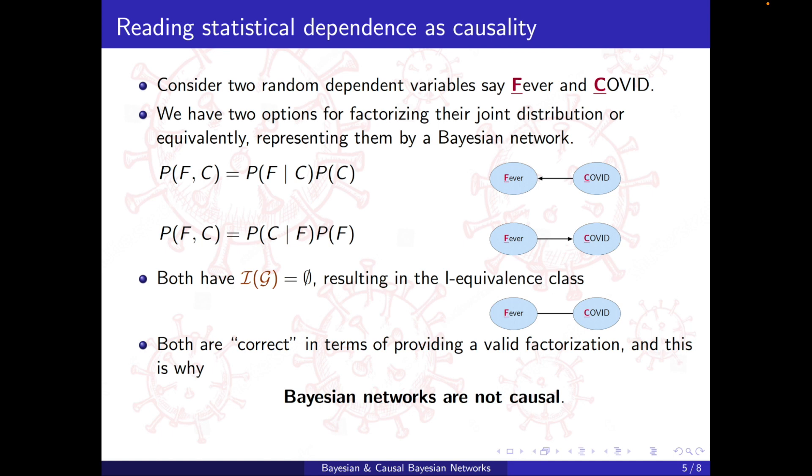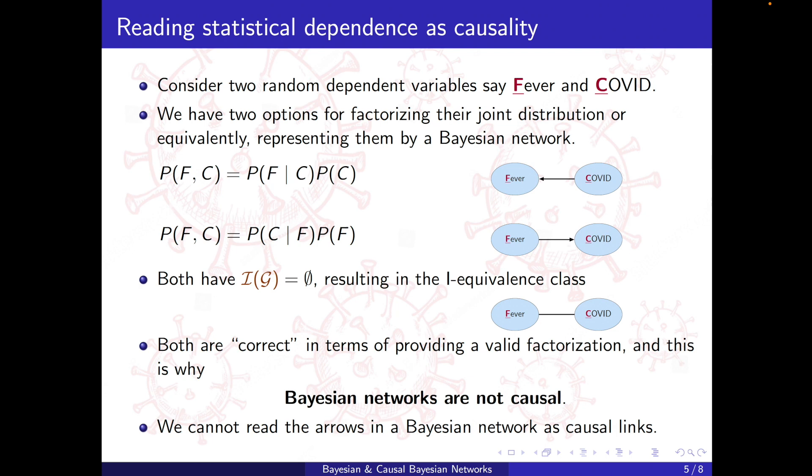And this is exactly why Bayesian networks are not causal. Because causality is in one direction, either A causes B or B causes A. So we cannot read the arrows in a Bayesian network as causal links. And this is a mistake that sometimes happens in the literature. A Bayesian network is obtained from data, for example, and then there's a high tendency to read the arrows as causal links like fever is causing COVID.